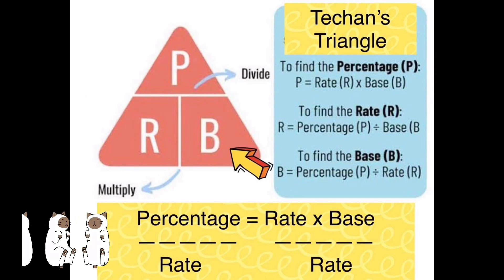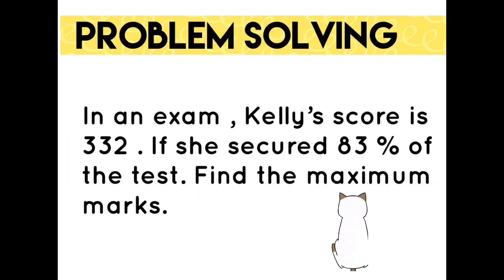To find the base using the Techan's triangle, base is the percentage divided by rate. Or you can divide both equations by the rate to cancel it out and find the base. Now let's apply a word problem.